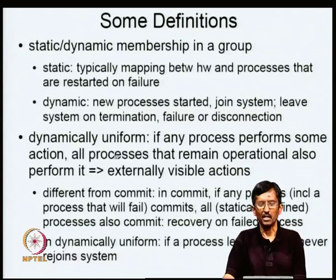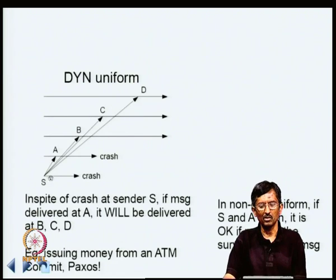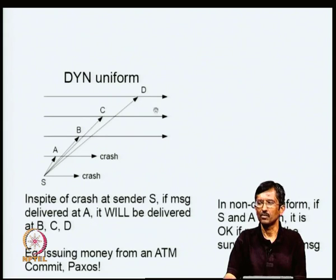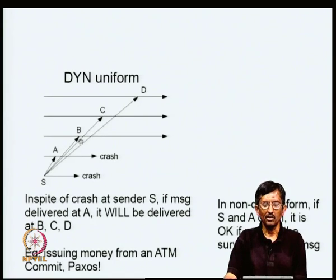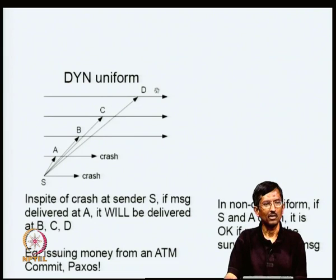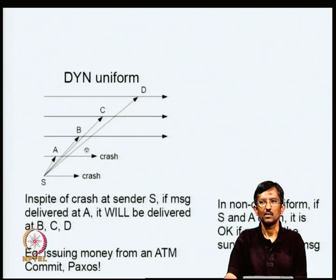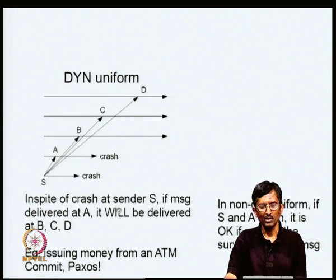I will illustrate dynamically uniform by a diagram. Suppose you have sender S doing a multicast to A, B, C, D. S sends a multicast and dies. A gets the message, does whatever is needed, and also dies. B, C, D are surviving. The key point is that if A gets something and acts because of receiving that message from S, it is very important that B, C, D also act on it. This is dynamically uniform: the minute a message is delivered to one party, it is absolutely critical that all remaining parties — B, C, D — also receive it, even if the original recipient dies.